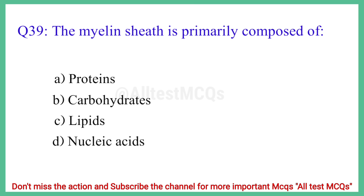Question No. 39: The myelin sheath is primarily composed of? The correct answer is option C: Lipids.